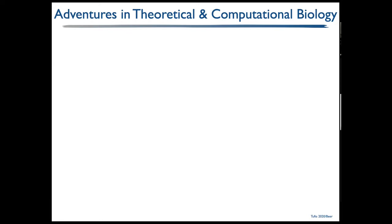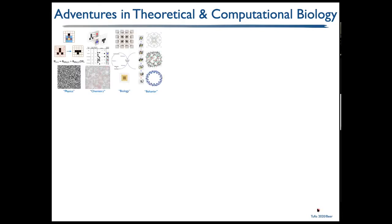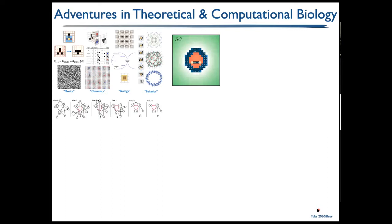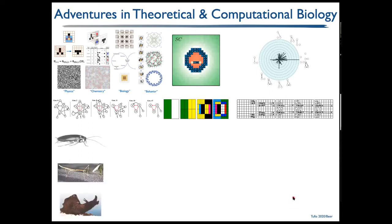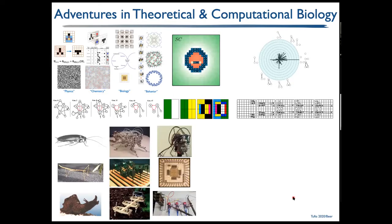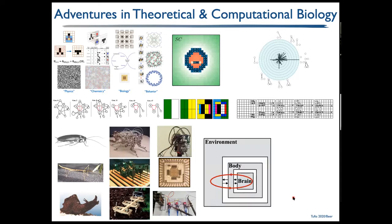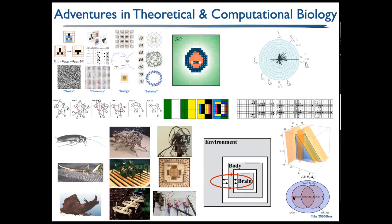I'm fairly broadly interested in theoretical and computational biology, doing work on fundamental theories of emergent individuals, protocell modeling, evolution of genetic regulatory networks, evolution of cellular differentiation, evolution of neural development, the relationship between developmental bias and evolution, computational neuroethology — which is about the neural basis of behavior — biorobotics, neuromorphic computing, evolution and analysis of brain-body-environment systems, and mathematical tools in dynamical systems theory and information theory.